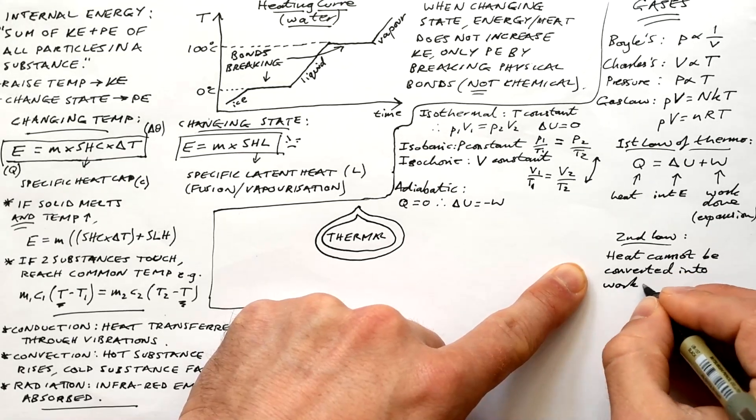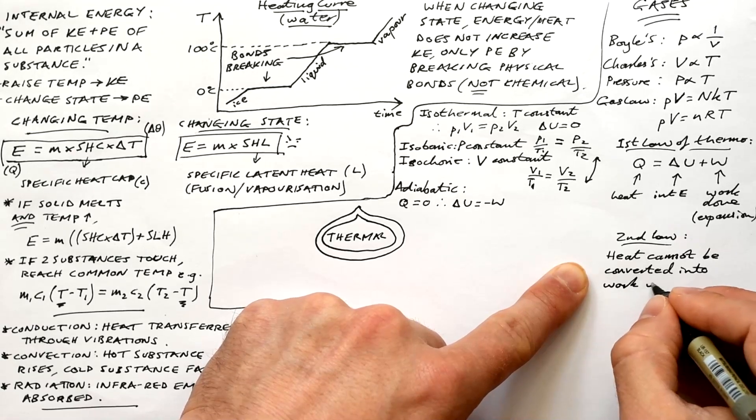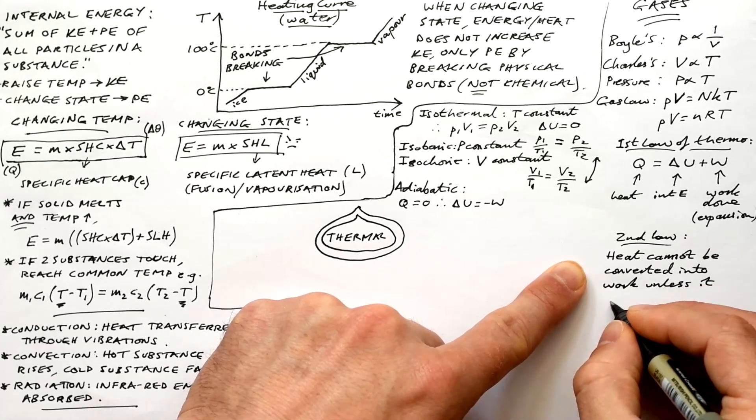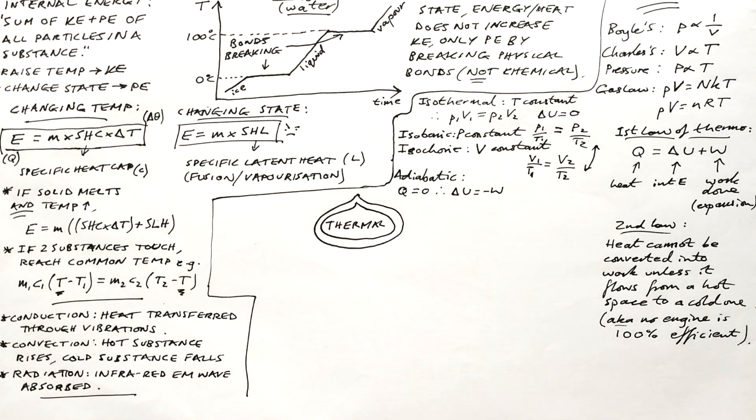The second law can be written like this. Heat cannot be converted into work unless it flows from a hot space to a cold space. So that means you're always going to get a change in temperature somewhere in the system. So that means that no engine can be 100% efficient.